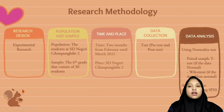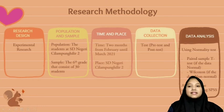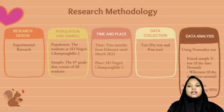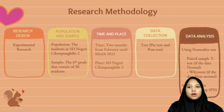The next is data collection — we will use pre-test and post-test. The last is data analysis. We will use a normality test to determine if the data is normal or not. If the data is normal, we will use the paired sample t-test. If the data is not normal, we will use the Wilcoxon signed-rank test. All the data will be calculated using SPSS.